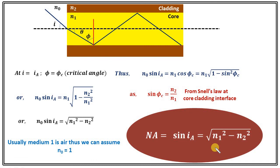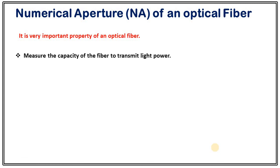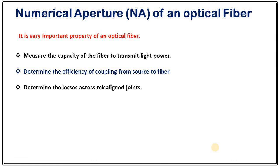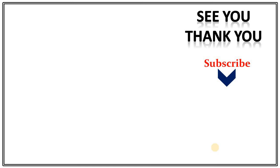Numerical aperture is a very important property of an optical fiber. It measures the capacity of a fiber to transmit light power — the larger the numerical aperture, the more power will be transmitted through the optical fiber. It also determines the efficiency of coupling from source to fiber: if numerical aperture is very small, the coupling efficiency will be very less. It also determines the losses across misaligned joints, so if the joints are not aligned properly, more light will be lost, and that is decided by numerical aperture. I will see you in the next lecture where we will discuss attenuation and pulse dispersion in an optical fiber.